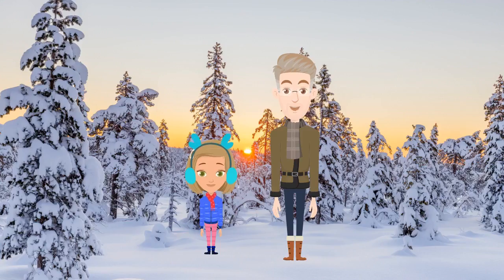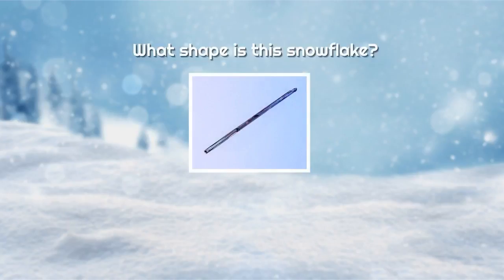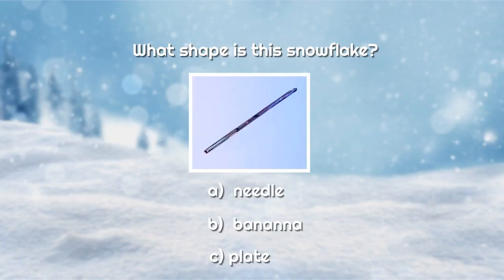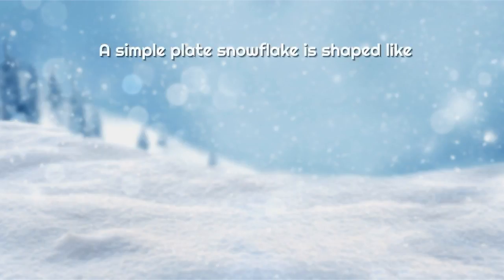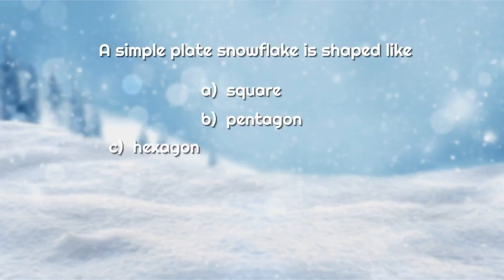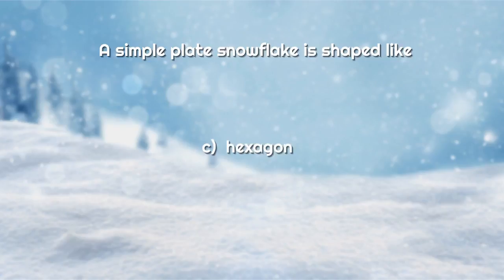And this is how the snowflakes form and why they have different shapes. Let's finish with a short quiz. First question: What shape is this snowflake? Is it A. Needle, B. Banana, or C. Plate? The correct answer is A. Needle. Next question: A simple plate snowflake is shaped like A. Square, B. Pentagon, or C. Hexagon? The correct answer is C. Hexagon.